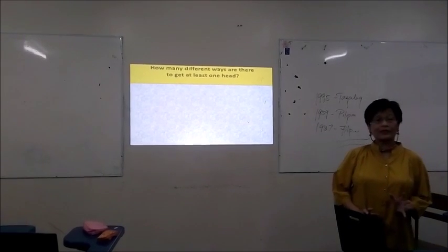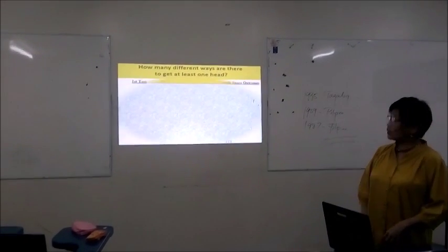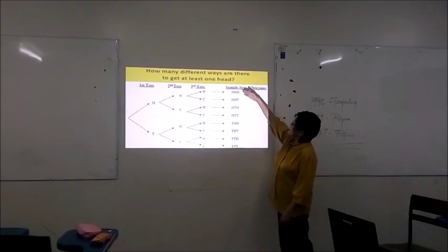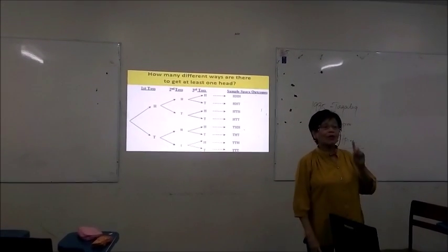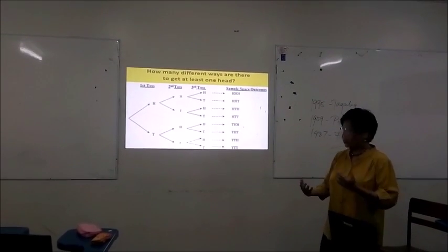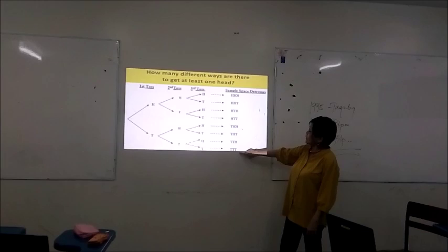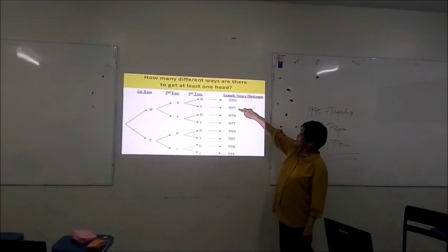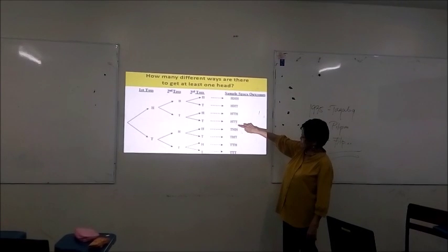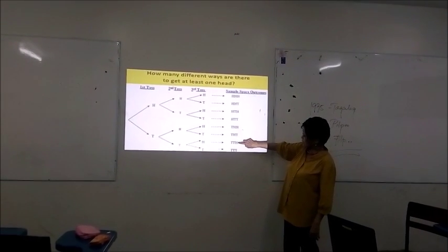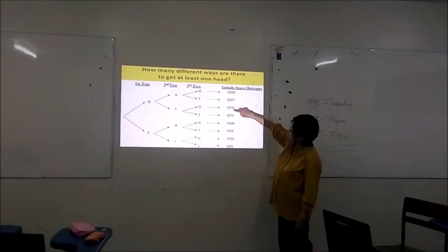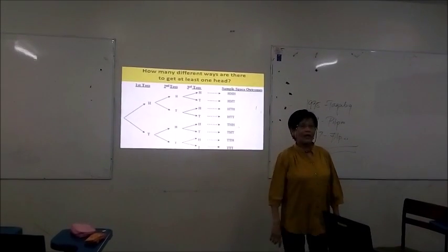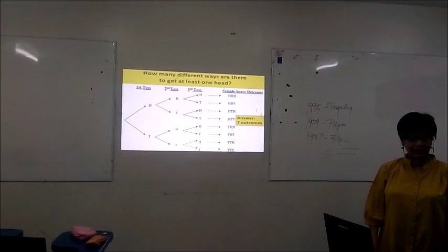The next question is: how many different ways are there to get at least one head? When we say at least one head, it means one, two, three, or more. Looking at the outcomes, all of them have at least one head except TTT, which has no head at all. So we have seven outcomes with at least one head. The answer is seven outcomes.